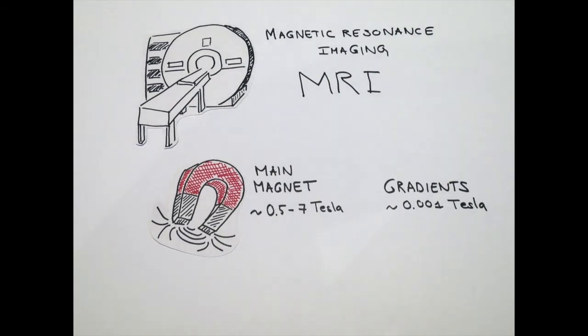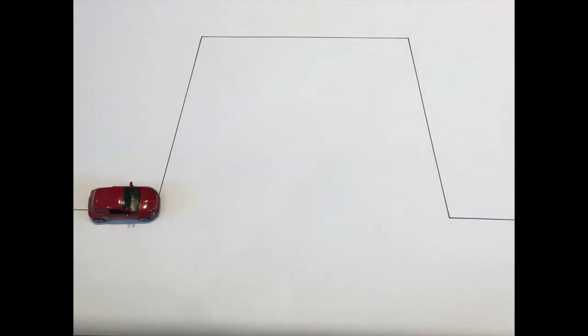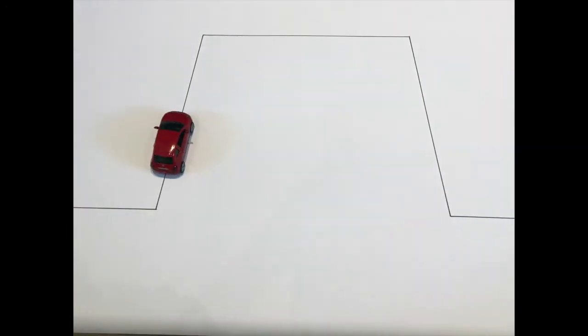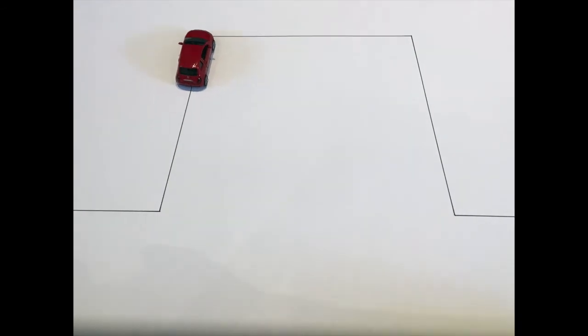Gradients are crucial to create images as we use them to locate where in the body the signal is coming from. To do this position encoding, the gradient has to follow a very specific trajectory over time.